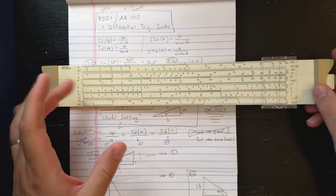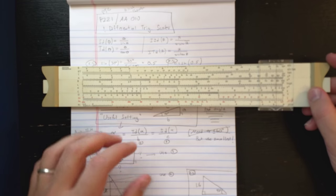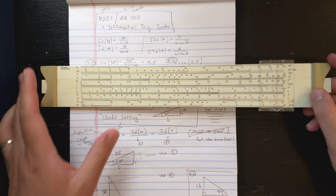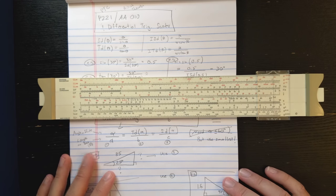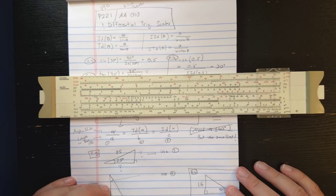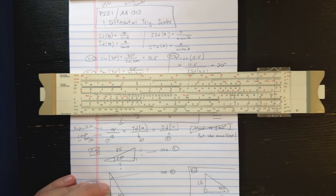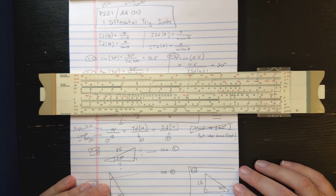If you're used to the regular trigonometric scales, which are on this slide rule just in case that's what you're used to, then these are kind of strange scales. They're weird. The way you use them is weird. But I'm going to try to explain to you how to use them, but also the inner logic of them.